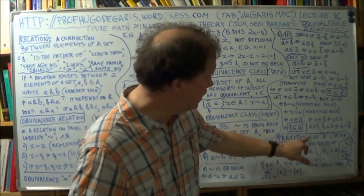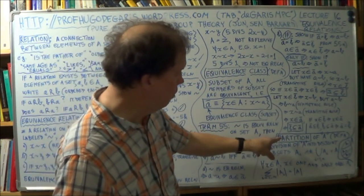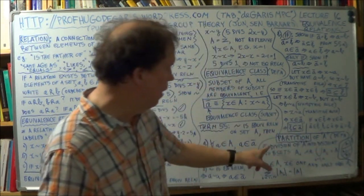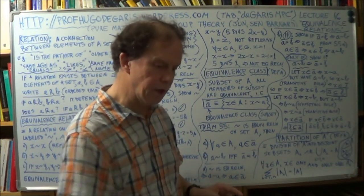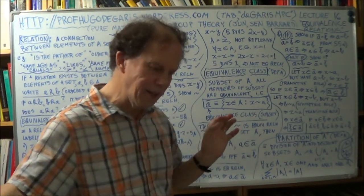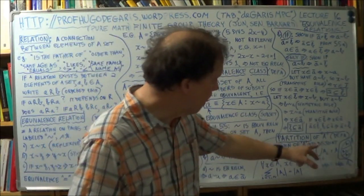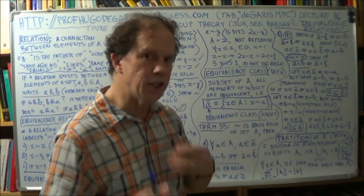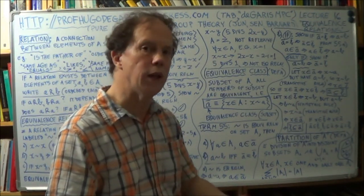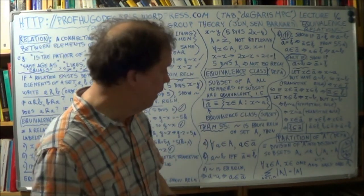If you use it as a noun, what is a partition? A partition of a set — big A — is a kind of division of that set into subsets. It's like cutting the set into portions or subsets, but in such a way that the subsets are disjoint — they have no elements in common. That's what disjoint means.